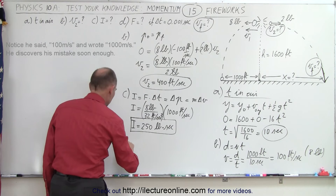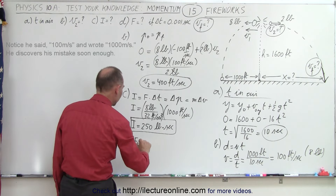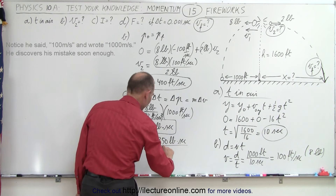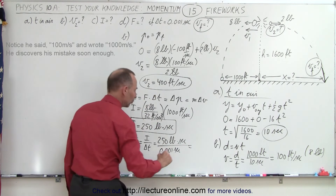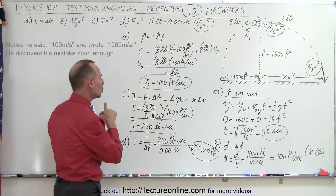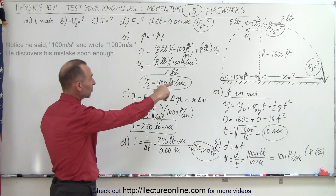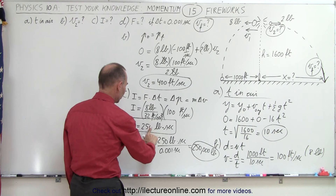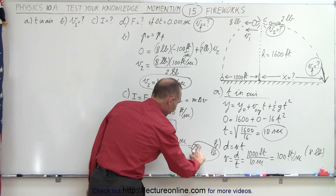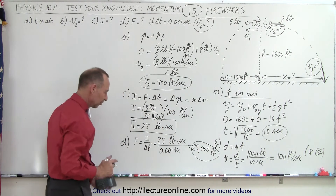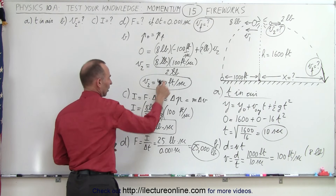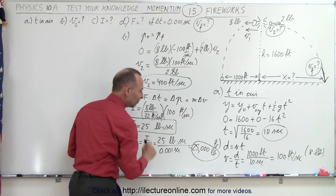The force can be found using impulse again. Force equals impulse divided by delta-t. If the impulse is 25 pound-seconds divided by 0.001 seconds, that means we have a force of 25,000 pounds. I initially grabbed the wrong number — 1000 feet per second instead of the correct 100 feet per second velocity — so the corrected answers are 25 pound-seconds for impulse and 25,000 pounds for force.